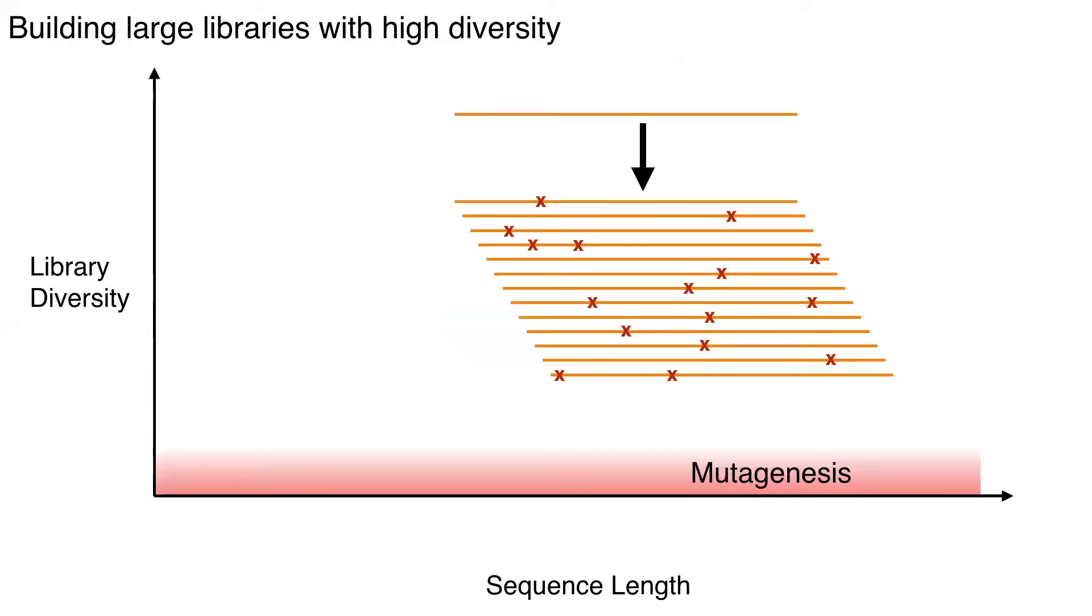The first and most oldest, of course, being just mutagenesis. We can just take a gene and randomly or specifically introduce mutations. And that's extremely powerful, but the resulting library diversity is extremely low. So you tend to only explore the local landscape around your particular template that you're mutating.